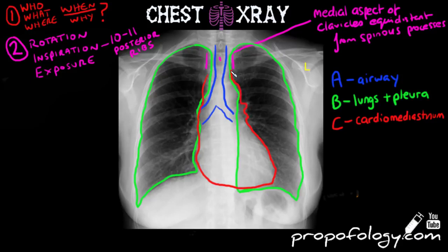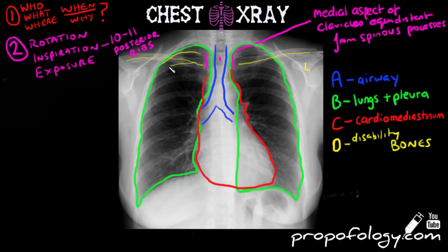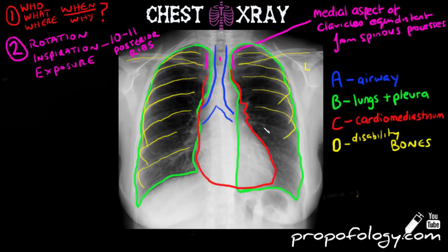We'll talk about some reference points for sizes of particular bits of the anatomy in a minute. Staying true to our ABCDE mnemonic, we're going to look at D — disability — which incorporates the bones. You're going to try to trace the clavicles, look at the spinous processes in the midline, and then work on the ribs — starting at the top and working your way down, starting at the posterior aspect of the ribs and working your way forward, looking for fractures or any displacement.